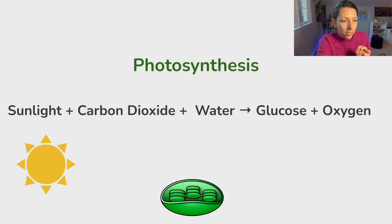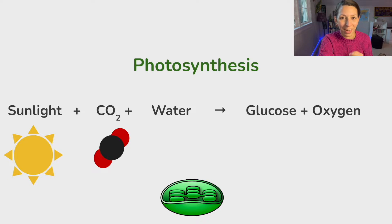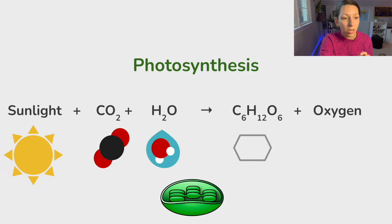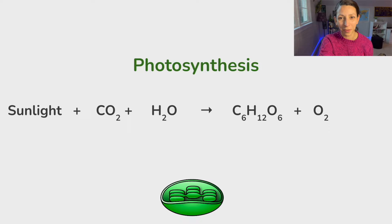Let's talk a little bit more about these ingredients. Carbon dioxide can also be abbreviated as CO2 — C for carbon, O for oxygen, meaning there are two atoms of oxygen and one atom of carbon in each carbon dioxide molecule. Water is H2O, and glucose is C6H12O6. That means there are six carbons, 12 hydrogens, and six oxygens in this one molecule. Sometimes you'll see glucose represented as a hexagon shape. And oxygen is O2. So this is our full equation for photosynthesis, not balanced.